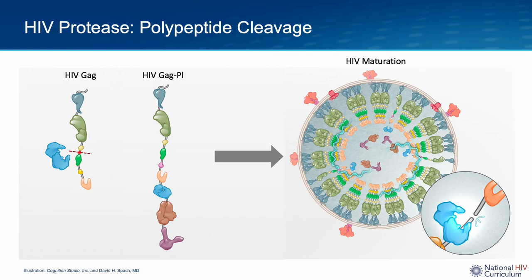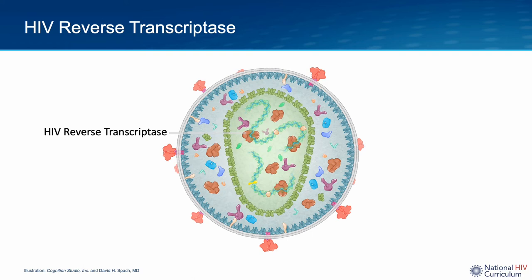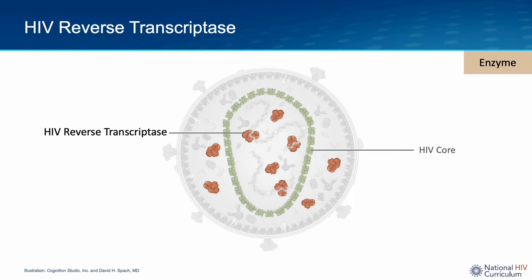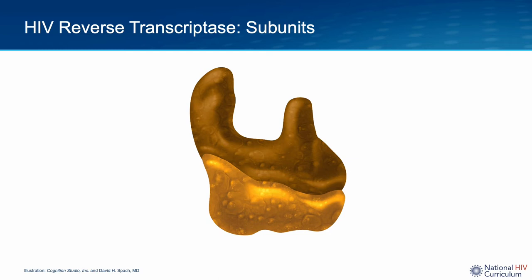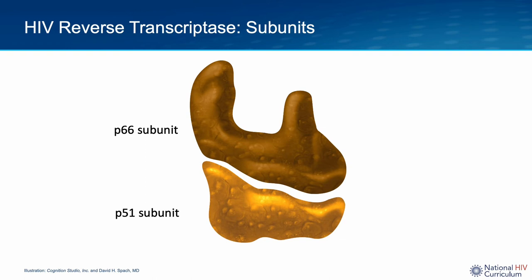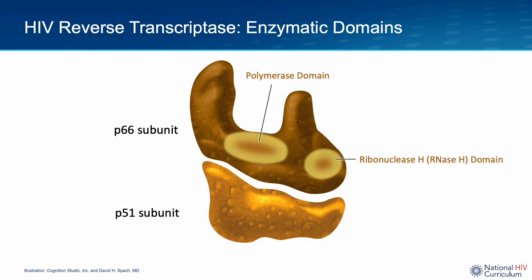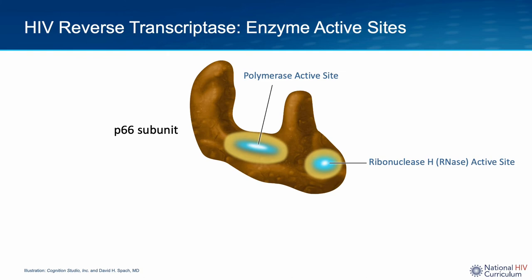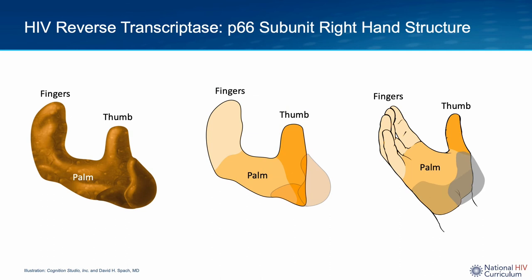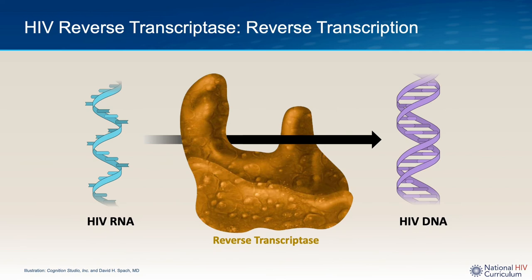The next enzyme to review is reverse transcriptase. Each virion has approximately 100 reverse transcriptase enzymes. The HIV reverse transcriptase contains two major distinct subunits: the larger P66 subunit and the smaller P51 subunit. The P66 subunit serves more of a functional role with two important enzymatic domains, polymerase and ribonuclease H. The P51 subunit performs more of a structural and supportive role. The polymerase and ribonuclease H domains each have active enzymatic activity. The P66 subunit is often conceptually shown in a right-hand configuration with the fingers, thumb, and palm regions. The major function of HIV reverse transcriptase is to convert HIV RNA into HIV DNA in a highly complex process known as reverse transcription.